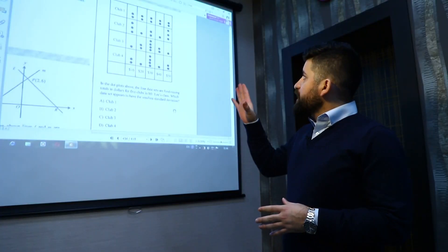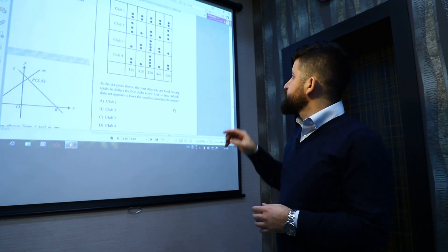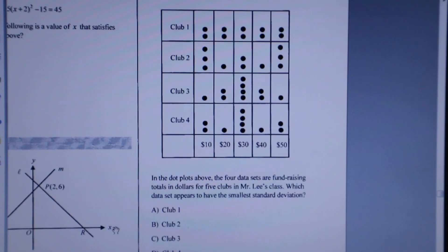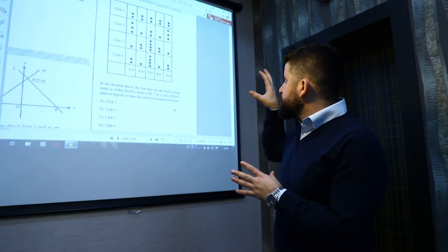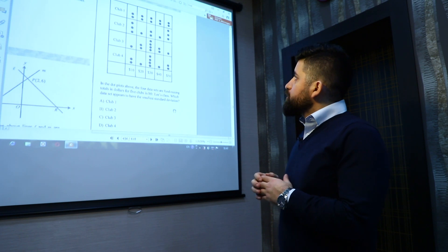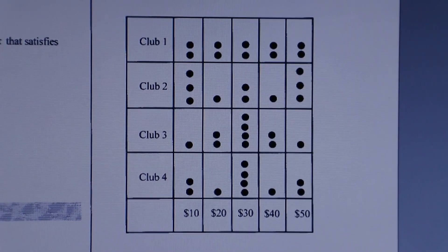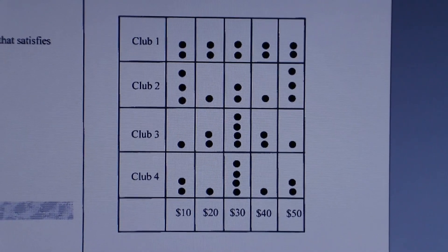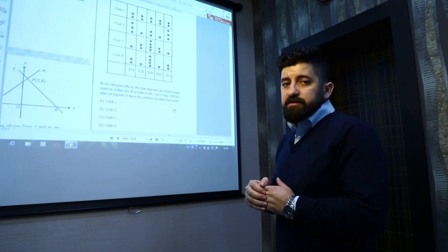We have here four clubs and the values where the dots show the frequency of these values. When we look through attentively, we can see in club three the data are more close to the middle, to the mean, which means that in club three we will have the smallest standard deviation.